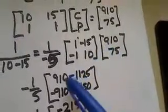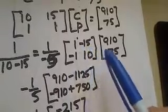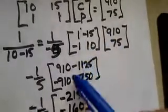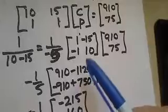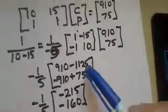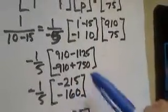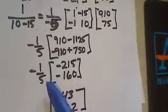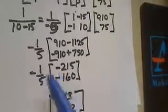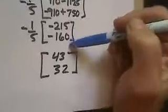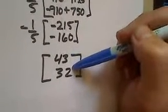So let's do that. 1 times 910 is 910. Negative 15 times 75 is minus 1,125. Negative 1 times 910 is negative 910. And 10 times 75 is 750. We combine those amounts using integer math, and we have minus 215 and minus 160. Then finally we multiply by negative 1 over 5. Remember, multiplying by negative 1 over 5 is the same as dividing by negative 5. When you have two negatives in a multiplication or division problem, you get positive results. So we end up finding that we have 43 cakes and 32 pies.